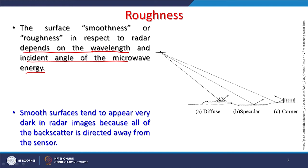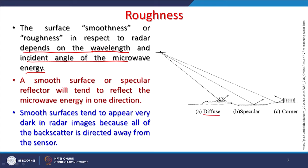Surface smoothness or roughness with respect to radar depends on both the wavelength and the incident angle of the microwave energy. A surface may produce diffuse reflection, specular reflection, or corner reflection. Corner reflection means maximum energy is returned to the radar, which is why metal corner reflectors are designed to reflect the maximum microwave energy directly back to the antenna or receiver.